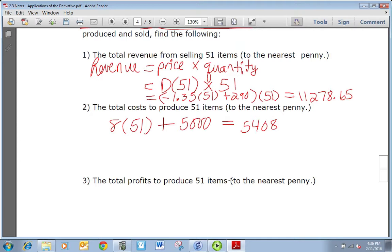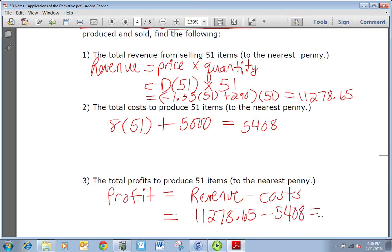Last we want profits. So profit is equal to revenue minus cost. Well, we found revenue in one, that was 11,278.65. We found the cost in the second one, 5,408. If you subtract those you should get 5,870.65.